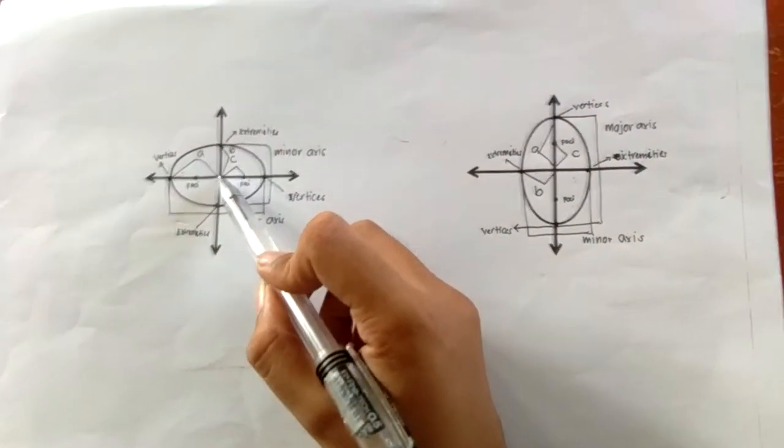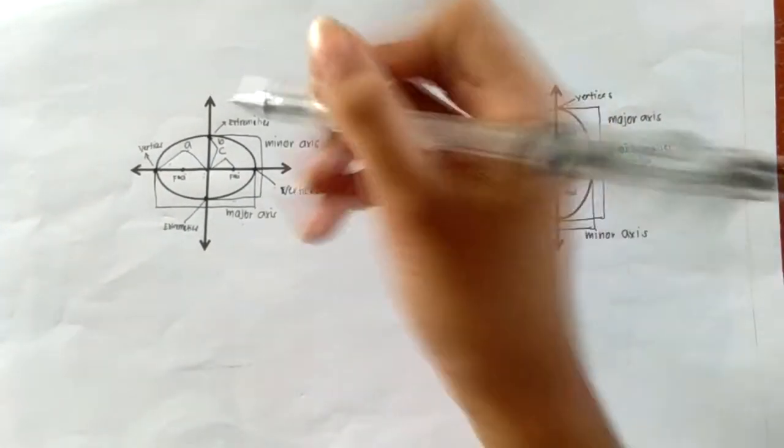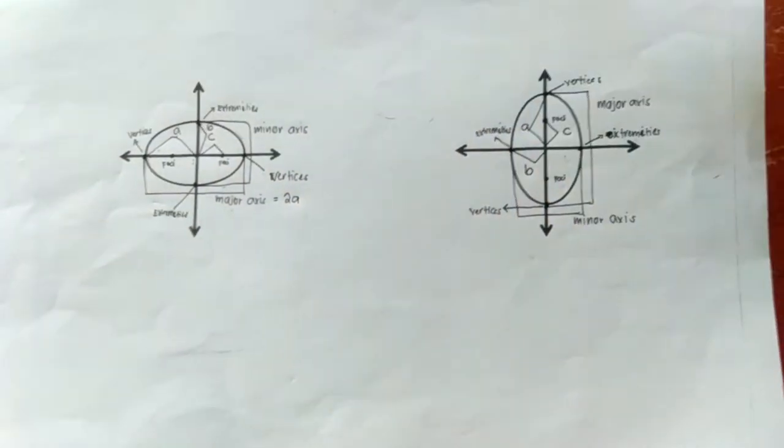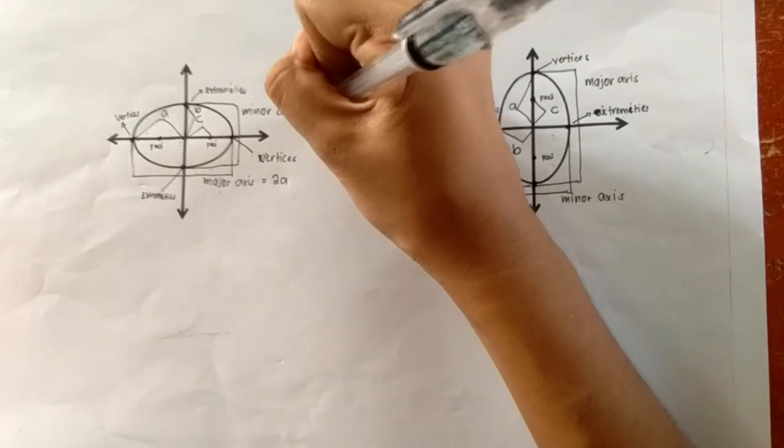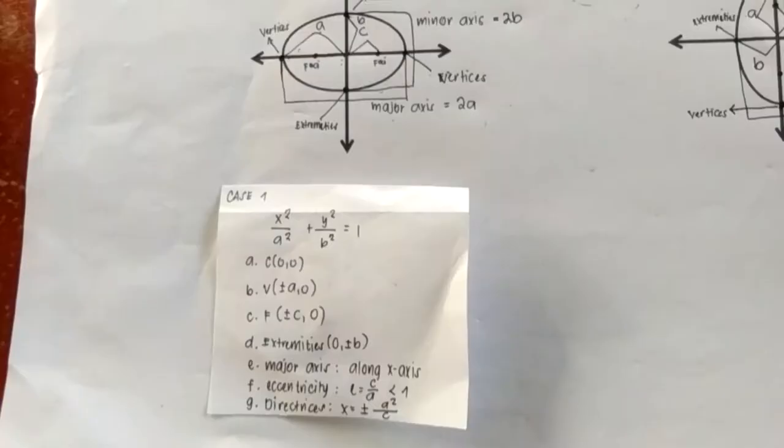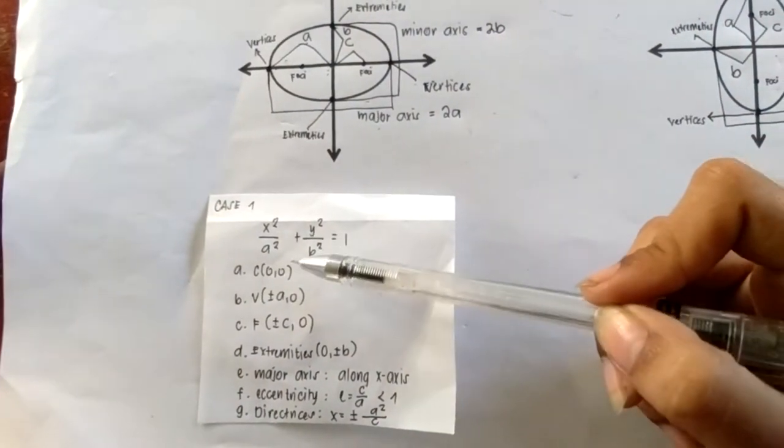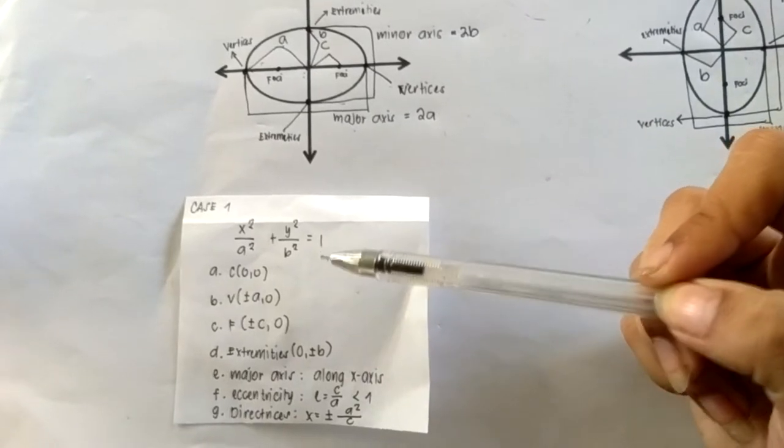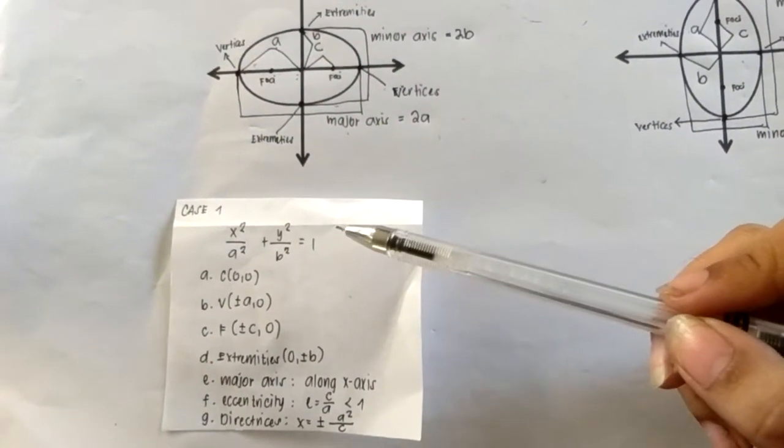If the distance from the center to the vertices is denoted with A, then the major axis will have the length of 2A and the minor axis will have the length of 2B. For this case, we have the formula x² over A² plus y² over B² equals 1, and these are the properties that you need to consider when you have this equation.